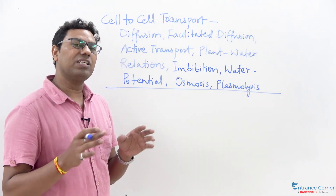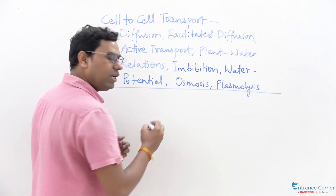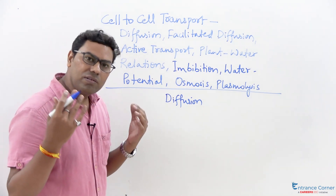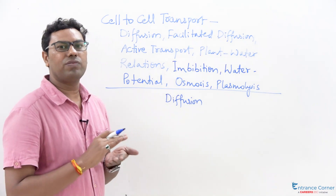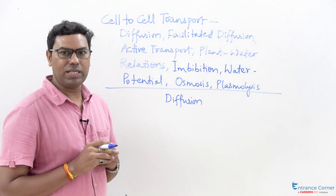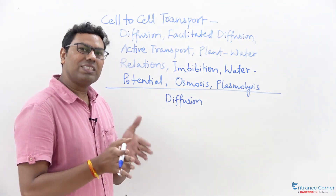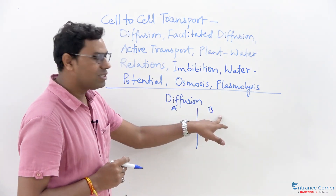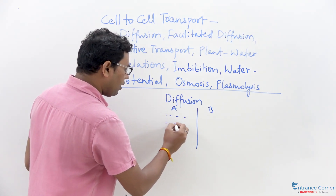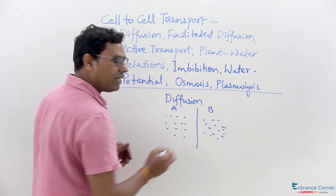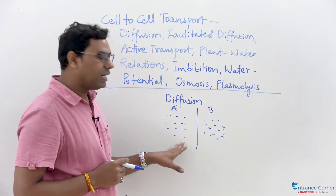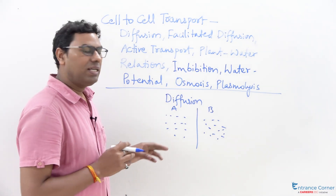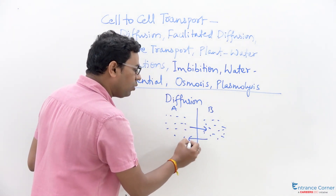The general basis of transportation in the plant is primarily cell-to-cell transportation, which may happen with the help of passive transport. Diffusion is one such passive transport and is one of the fundamental aspects of transportation of different molecules, based on the concentration gradient between two different areas. Suppose this is cell A and this is cell B — the concentration of solution present in A may be different from that in B.